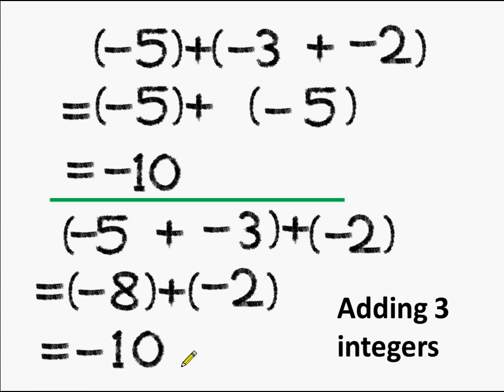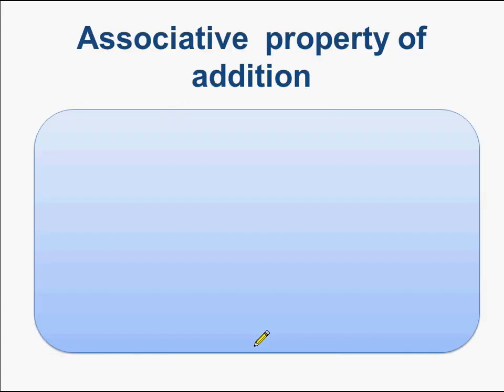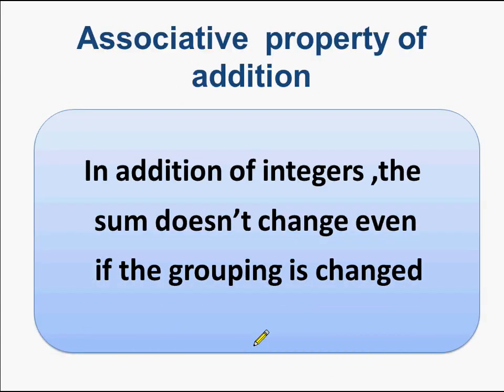What do we see? Whenever the grouping is changed while adding integers, the answer remains the same irrespective of the groups. So this is the associative property of addition: in addition of integers, the sum doesn't change even if the grouping is changed.